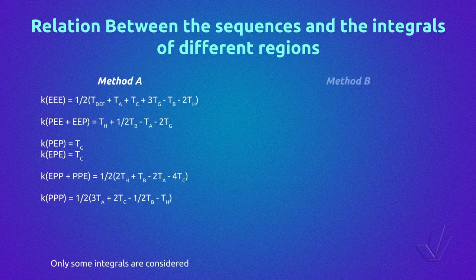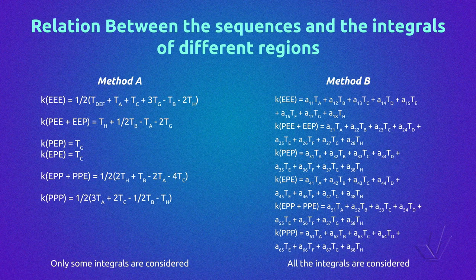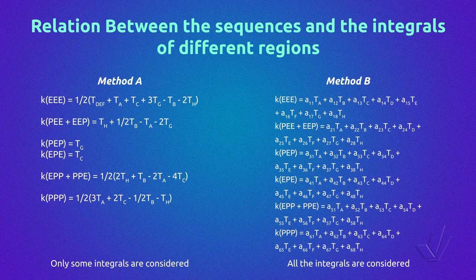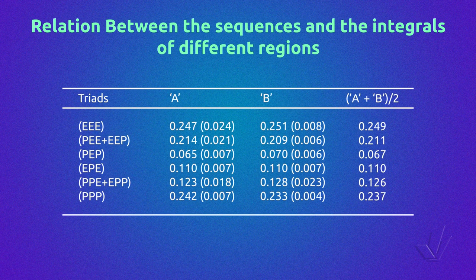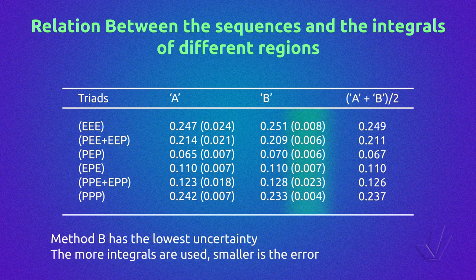They used two methods to calculate the percentage of each sequence from the integrals. In method A, only some integrals were used. In method B, equations incorporating the contribution of all integrals were used. The results showed the molar fraction of each sequence calculated by methods A and B along with standard deviations. Both methods gave good results, but method B had the lowest uncertainty. In general, the more integrals are used, the smaller the error.